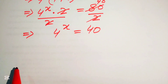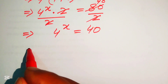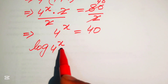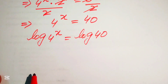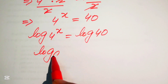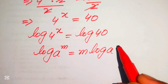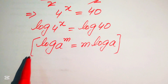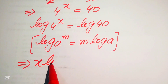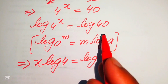This is now an exponential equation, and we solve it for the values of x. We take the log on both sides of this equation, written as log of 4 to the power of x equals to log of 40. On the left hand side we apply the property of log: log of a to the power of m equals m times log a. So we move the exponent x to the front, giving x times log 4 equals log of 40.